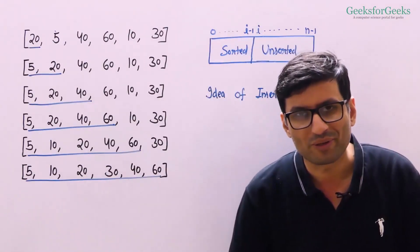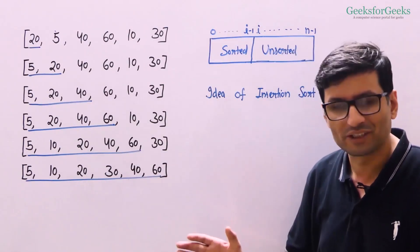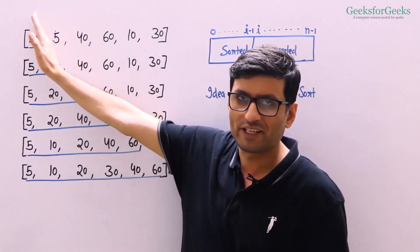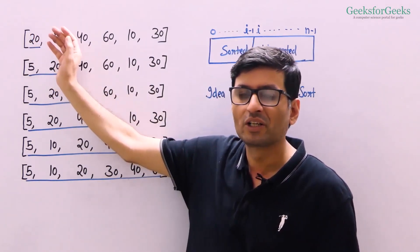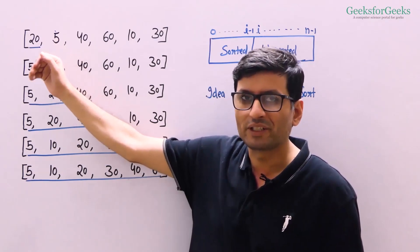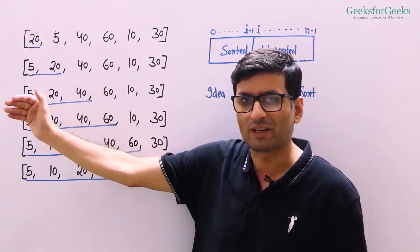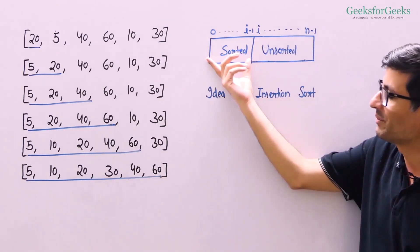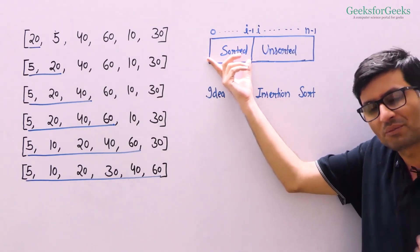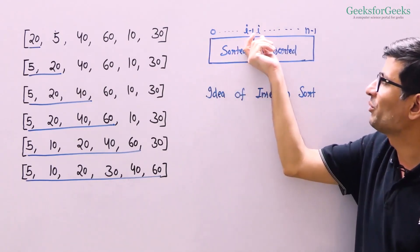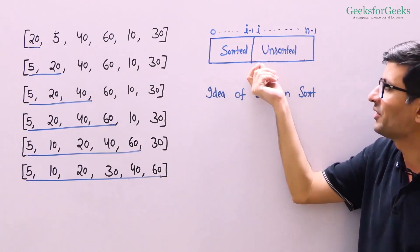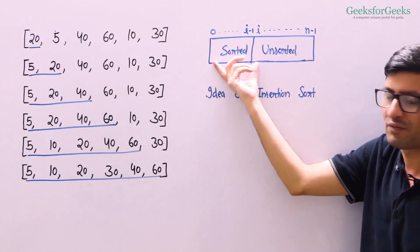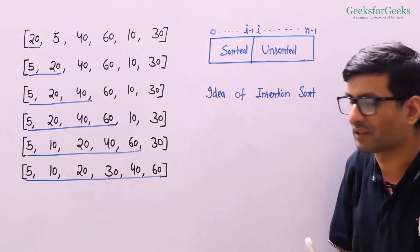Let us now talk about the idea behind insertion sort. We maintain a part that is already sorted. When we are at the current element, we insert it into the already sorted part and make the sorted part bigger. So when you are at index i, elements from index 0 to i-1 are already sorted. You put the element at index i into its correct position, and the sorted part grows from 0 to i-1 to 0 to i.